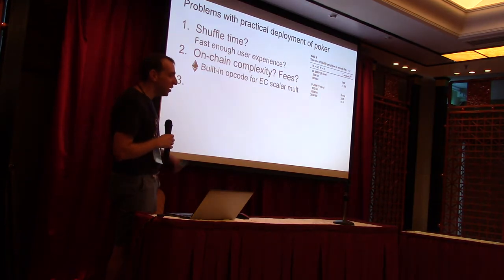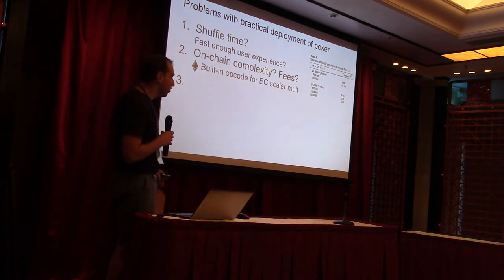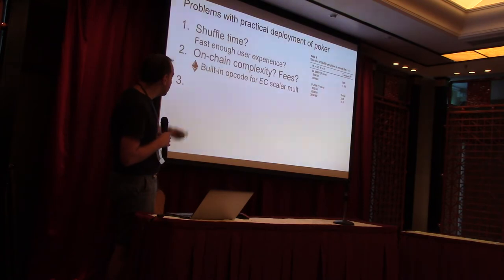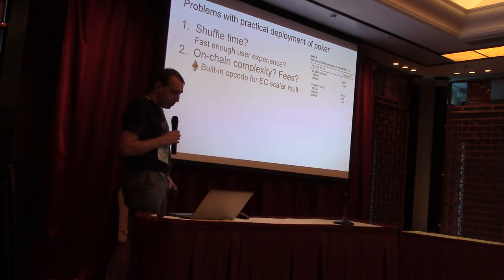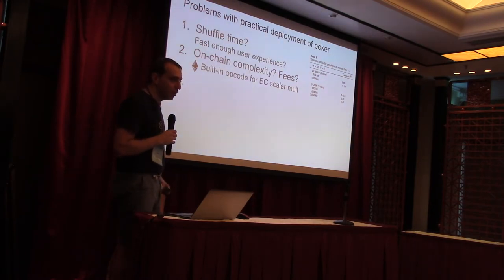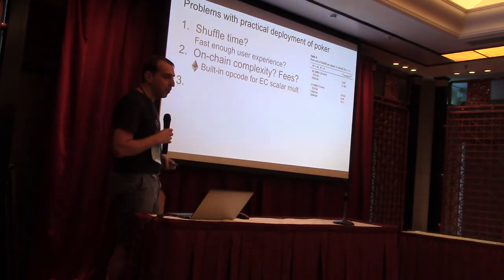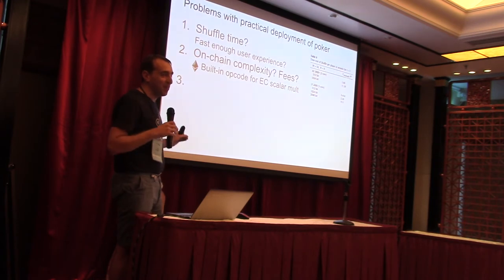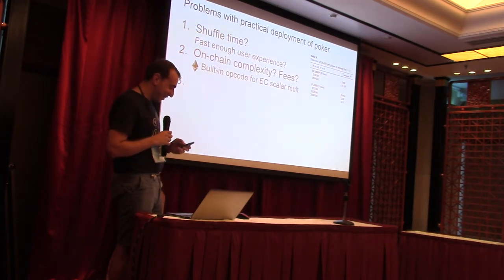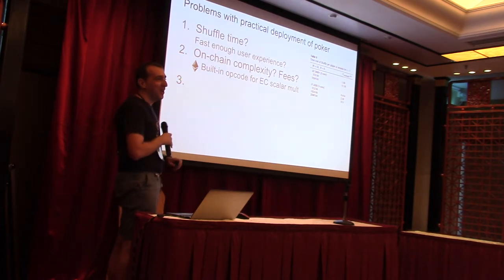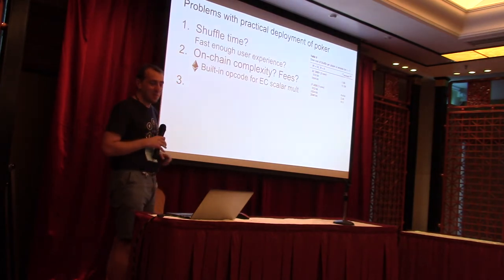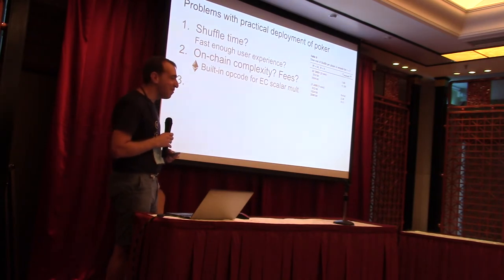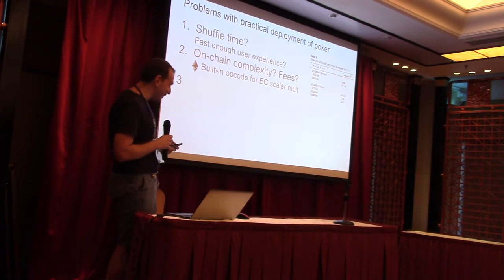The second problem is on-chain complexity: if you need to execute the poker logic on the blockchain, you pay high fees. This is not a big deal in Ethereum — there is already support for modular exponentiations, which is what we need for the zero-knowledge proof of knowledge for the poker logic. But the third point is a big deal — basically a deal breaker. Unless anyone has a guess, I'll explain why the entire scheme breaks apart and we cannot really implement mental poker.